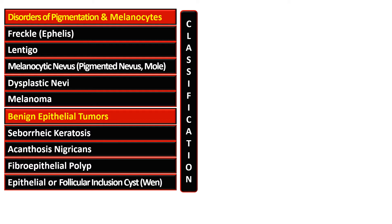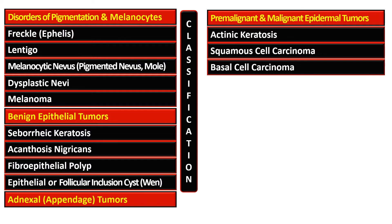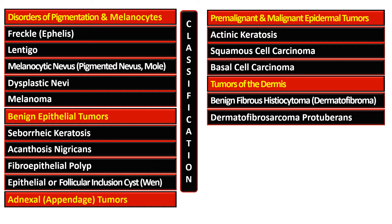Benign epithelial tumors are seborrheic keratosis, acanthosis nigricans, fibroepithelial polyp, epithelial or follicular inclusion cyst, and adnexal or appendage tumors. Pre-malignant and malignant epidermal tumors include actinic keratosis, squamous cell carcinoma, and basal cell carcinoma or rodent ulcer. Tumors of the dermis include benign fibrous histiocytoma, also named as dermatofibroma, or dermatofibrosarcoma protuberans.